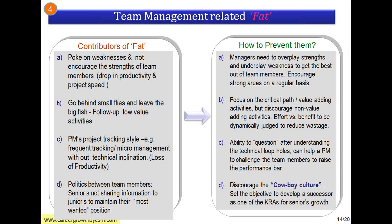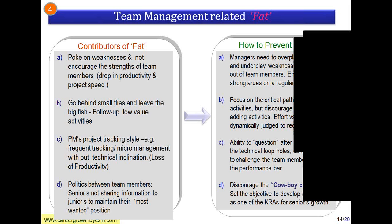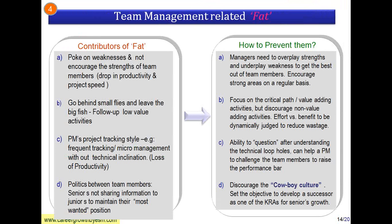The next topic is team management-related waste. The contributors of waste here are: poking the weaknesses and not encouraging the strengths of team members. Many managers are only interested in pointing out weaknesses — telling someone they are not good at this or that. When you poke weaknesses it induces productivity loss and demotivation. Instead, work on the strengths of the person. For example, if someone is good at making documents or observation, suggest they do testing — they will be motivated and will do it in flying colors.